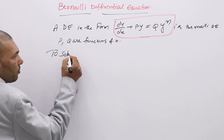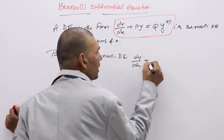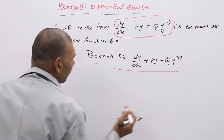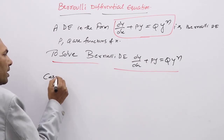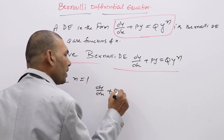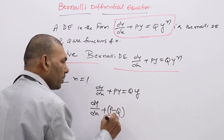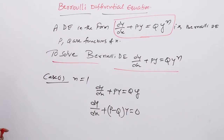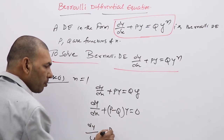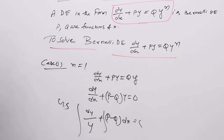To solve a Bernoulli DE in the form dy/dx plus Py equal to Qy^N: if N equals 1, it is a very easy case. The equation becomes dy/dx plus (P minus Q)y equal to 0. Dividing by y and multiplying by dx, then integrating gives dy/y plus (P minus Q)dx equal to C, which is the general solution when N equals 1.